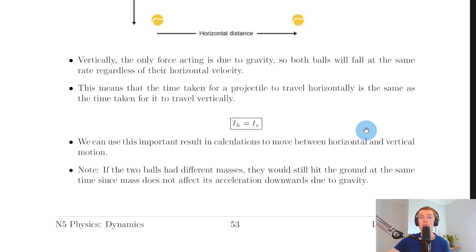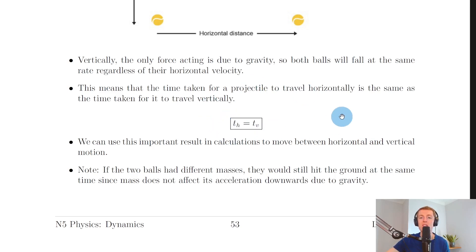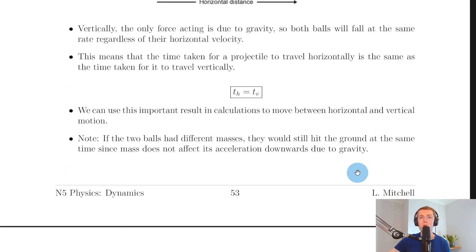For example, if you're asked to calculate the final vertical velocity v of a projectile but you're given horizontal data, you can use the horizontal motion data to find the time, and then substitute that time into the vertical motion equations to find the final vertical velocity. You'll see this in the worked example video for projectile motion.